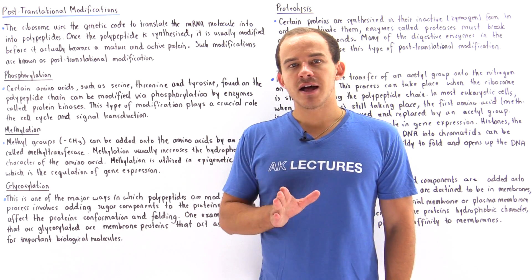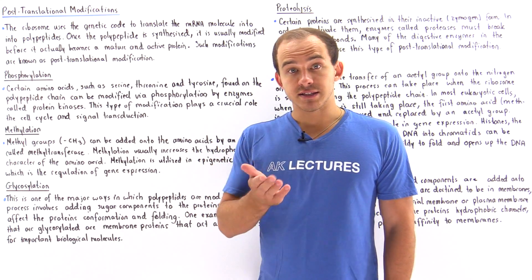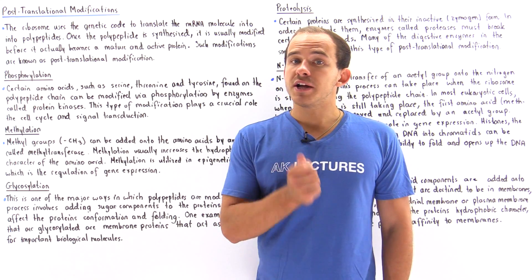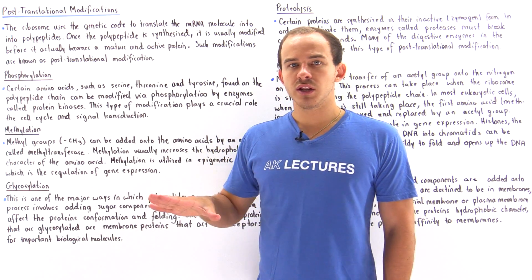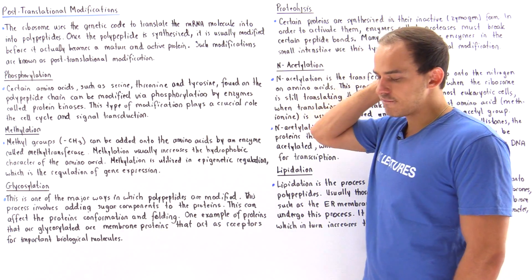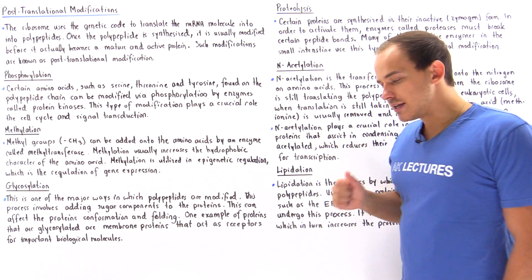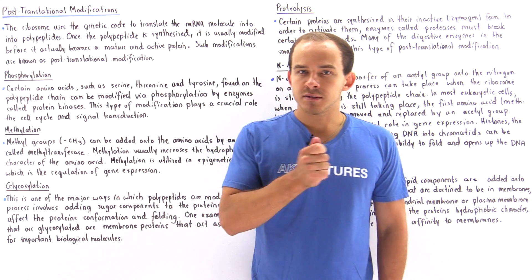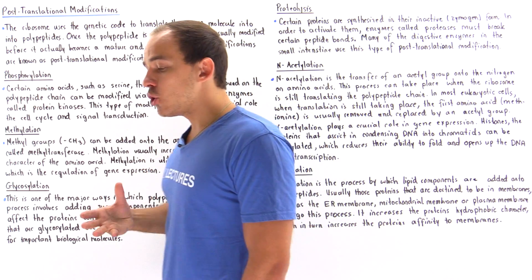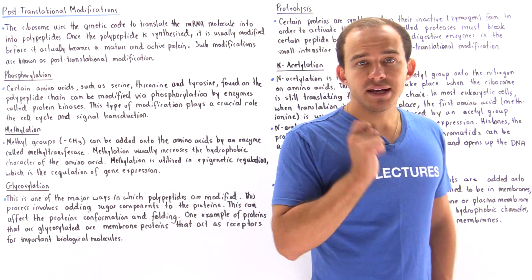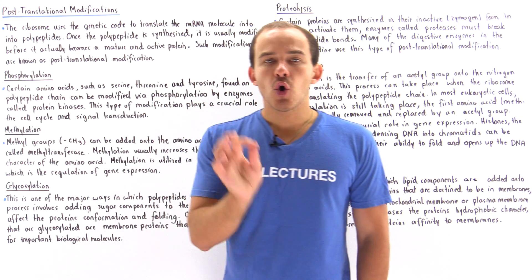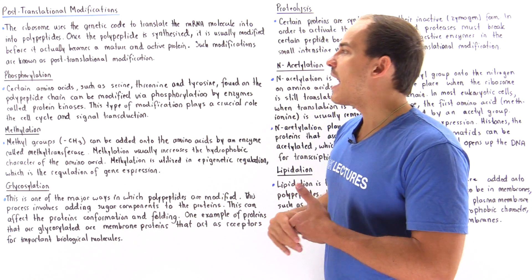Ribosomes are the machinery of the cell that are responsible for translating and synthesizing our polypeptides and proteins. They synthesize our proteins by using the genetic code to translate the sequence of nucleotides into the sequence of amino acids. Our polypeptides, once they are synthesized in the ribosome, are not complete. Before they arrive at the target location and before they are activated, they have to undergo many different types of modifications, known as post-translational modifications of our polypeptide chains.